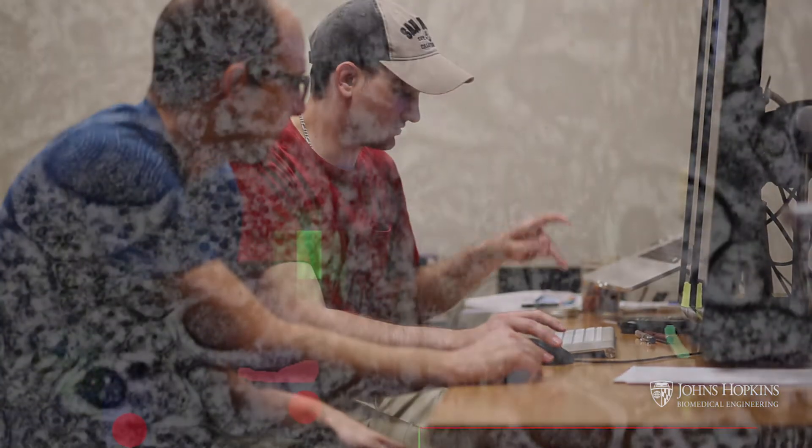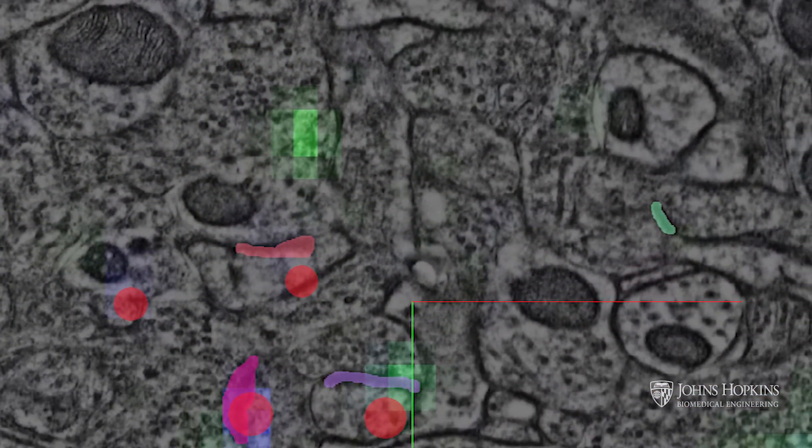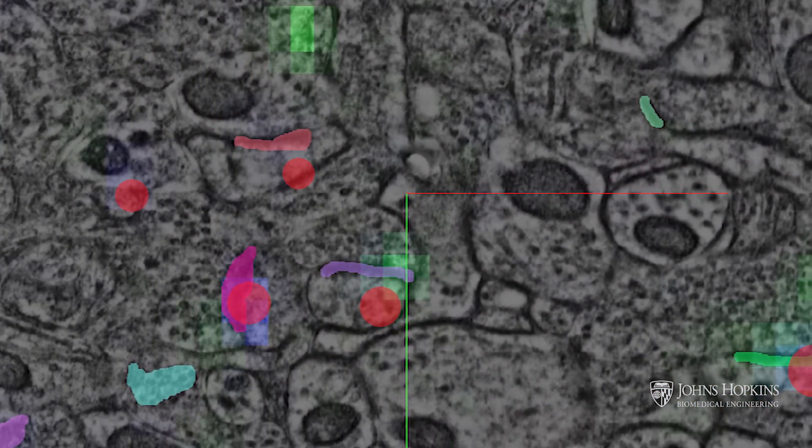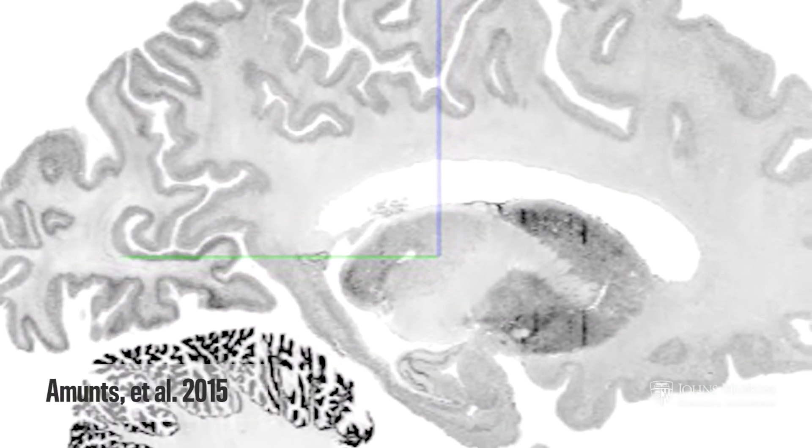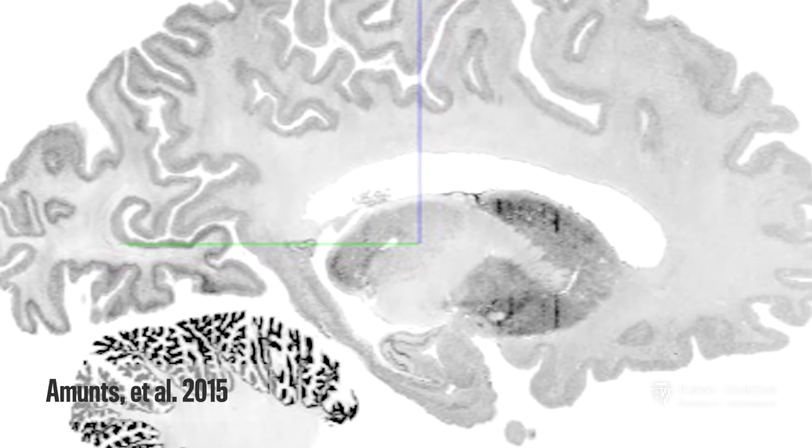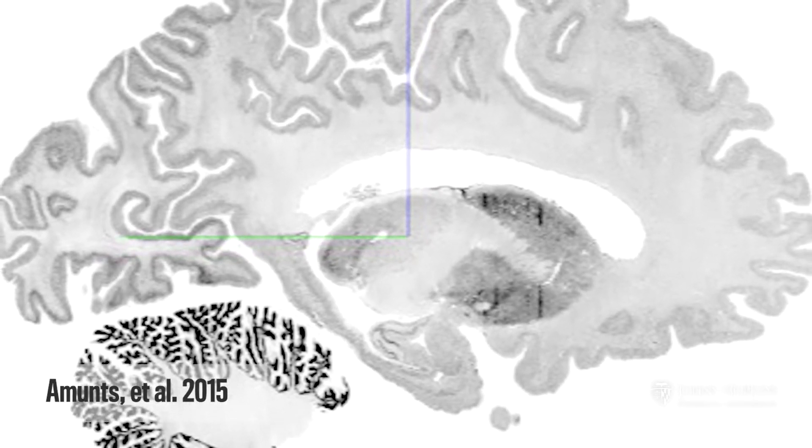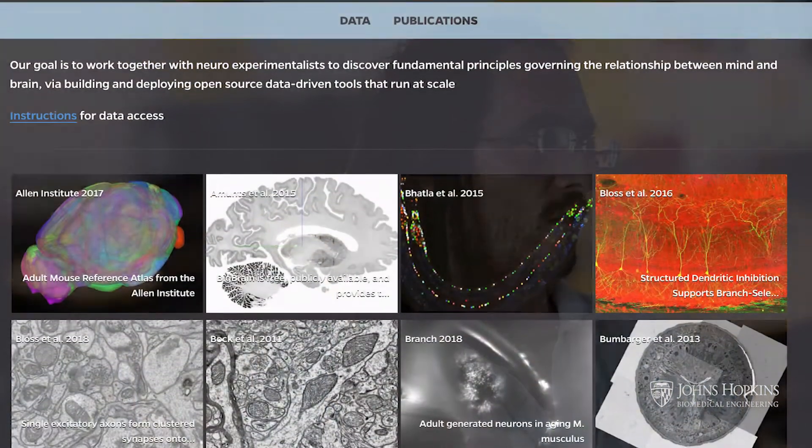Our work has helped change the field by being amongst the first to develop a number of technologies that help people deal with particularly large data. Around 2010, people started getting really large images of brains. It would take hundreds of terabytes for the entire brain. And so we build all the infrastructure that would enable people to store and visualize those data, but without having to download anything. So they can go to our website and look at the data.